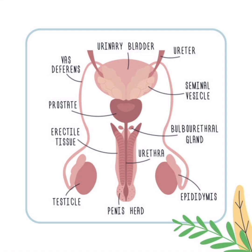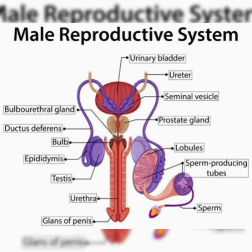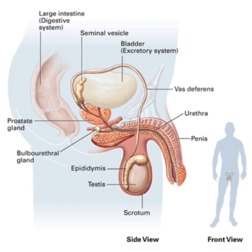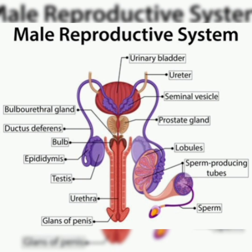The external part of the male reproductive system consists of the penis, scrotum, and testicles. First is the penis, which is divided into three parts: root, body, and head. The root is the base of the penis attached to the abdomen. The body comprises three chambers, which includes two corpora cavernosa and one corpus spongiosum, that fill with blood during arousal, leading to an erection.